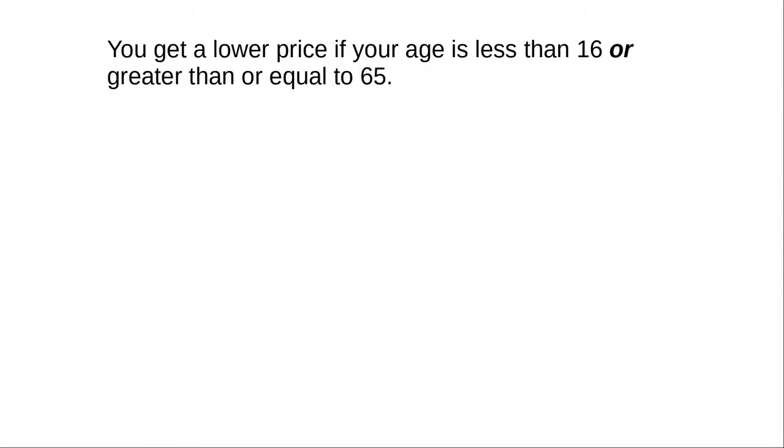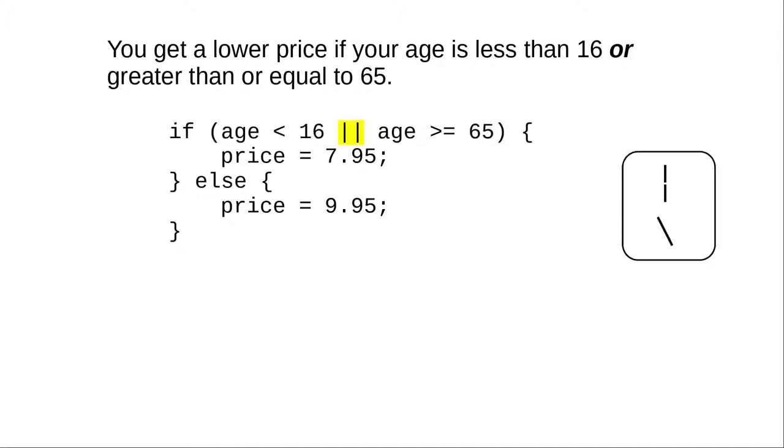Another way to combine conditions is with OR. You get a lower price if your age is less than 16 OR if it's greater than or equal to 65. Here's how we write that in C, using two vertical bars in a row to mean OR.